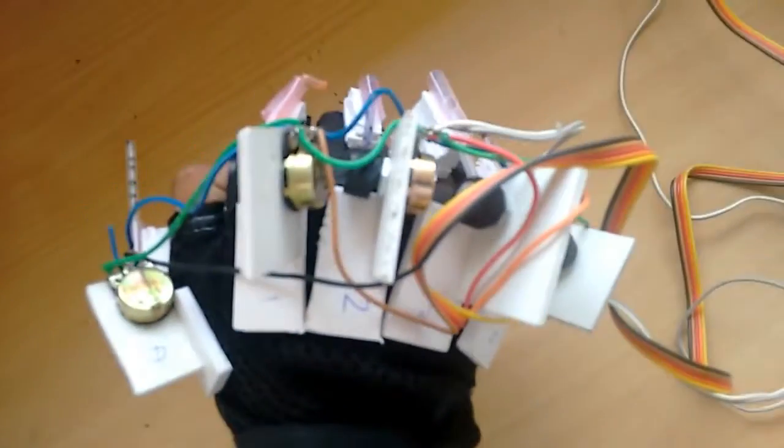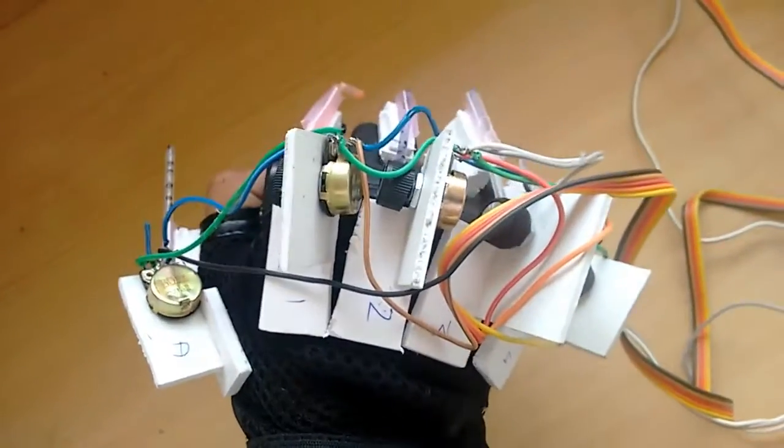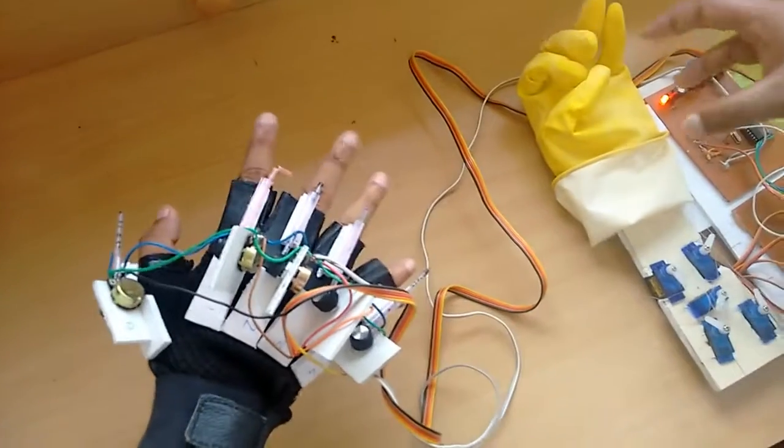A potentiometer gives variation in resistance. According to this resistance information, it controls the angle variation in the robotic hand.